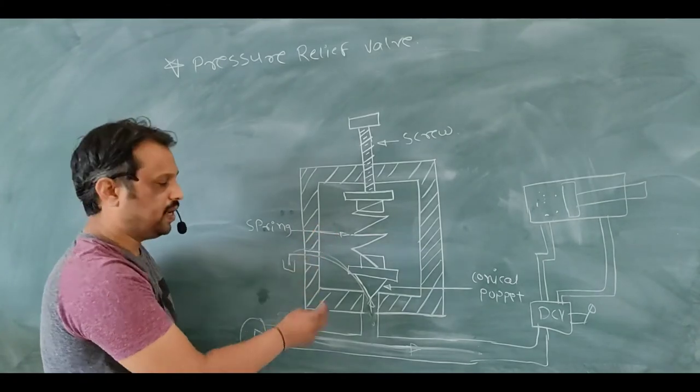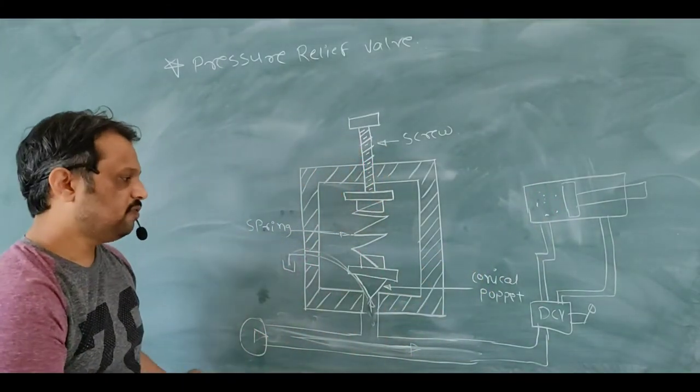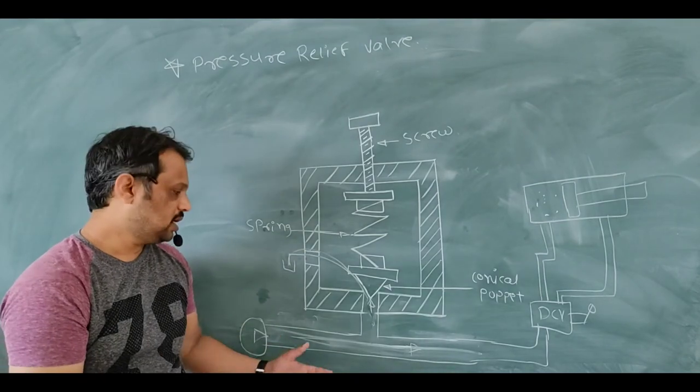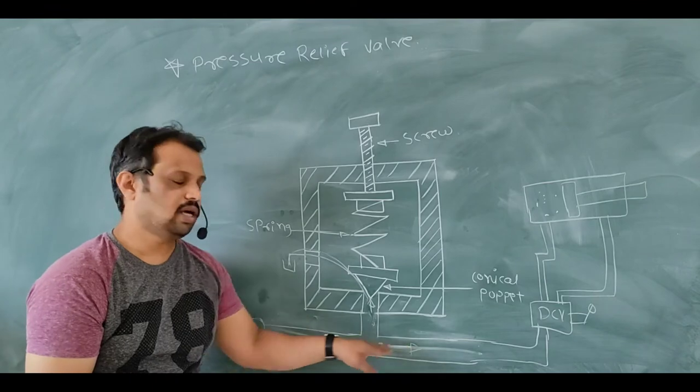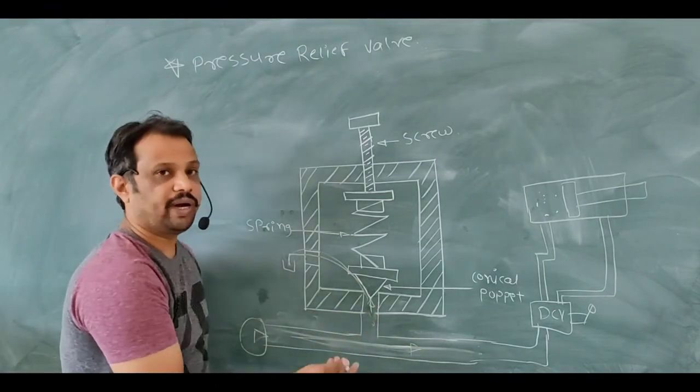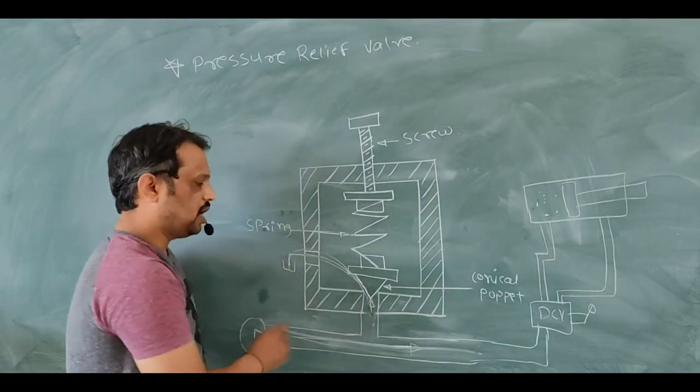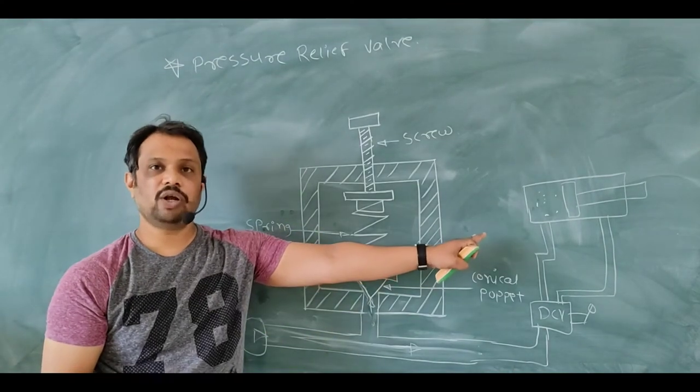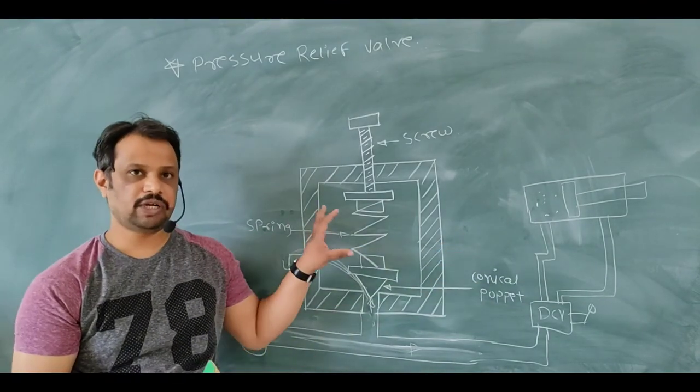If suppose due to some reason there is an increase in your pressure in this line, this pressure acts on conical poppet and conical poppet lifts up and oil goes to the tank and it safeguards your system. This is the working of your pressure relief valve.